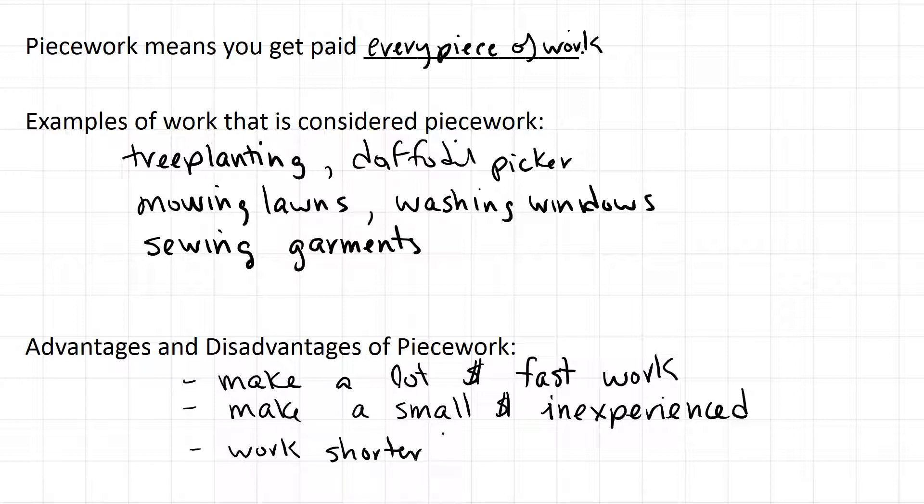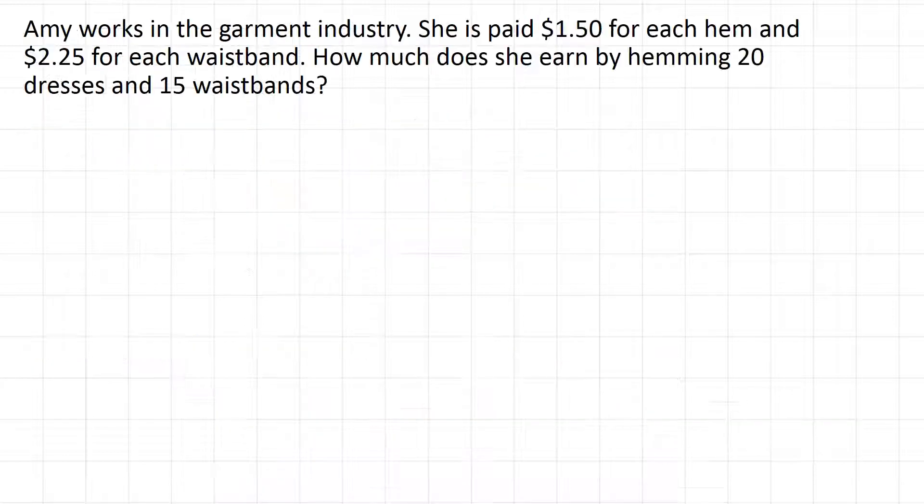You only get paid for the work you do. So let's talk about Amy, who works in the garment industry. She hems dresses and skirts and puts waistbands in. She gets paid $1.50 for each hem and $2.25 for each waistband. How much does she earn by hemming 20 dresses and 15 waistbands? Let's itemize this. For the hems, she makes $1.50 each hem.